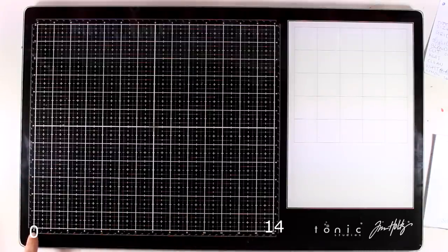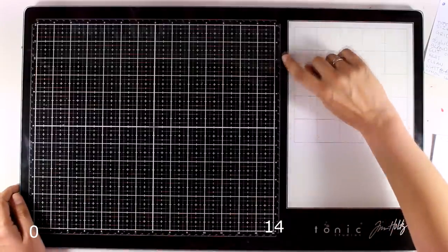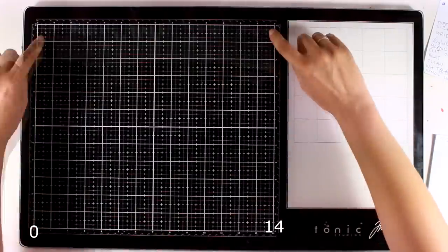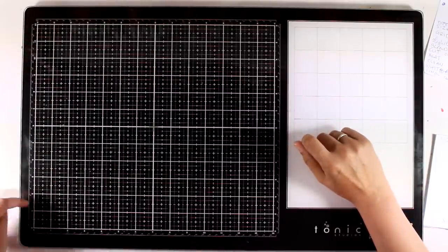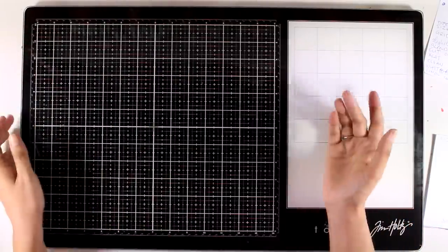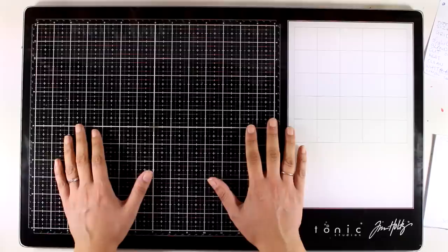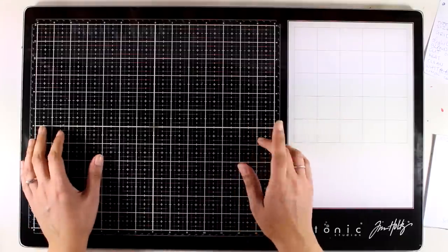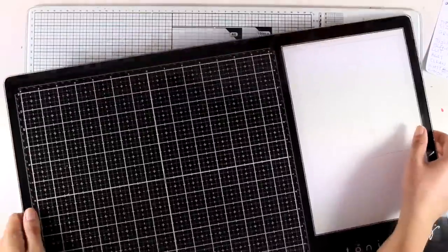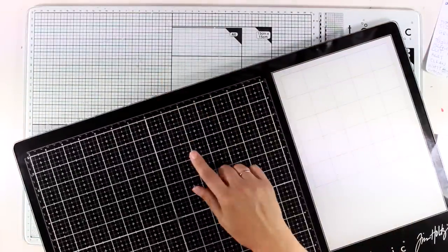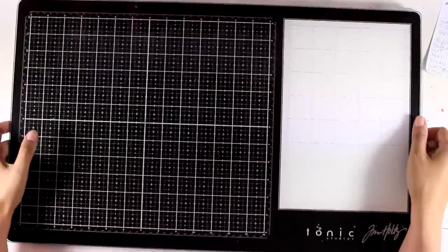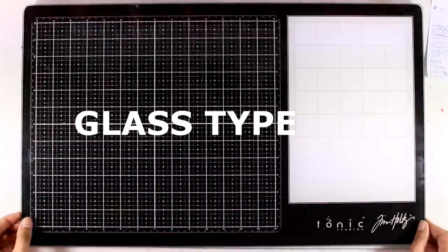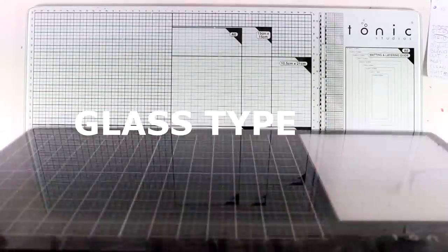If you look outside of the grid you will find measurements for centimeters. So if you want to use this Tonic Studios Tim Holtz glass mat and you are used to working with centimeters you still can, otherwise you can go and use the white one with the centimeters circles all over the grid.